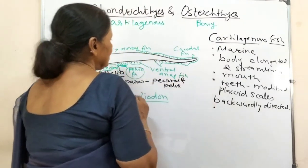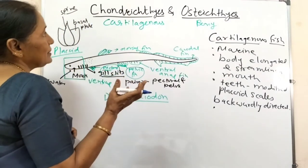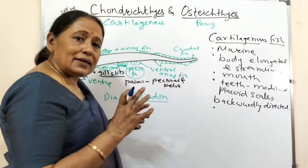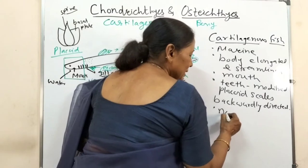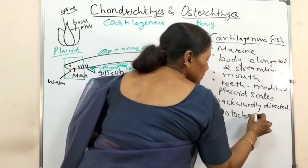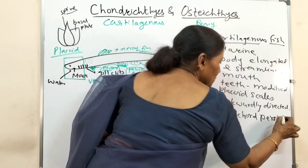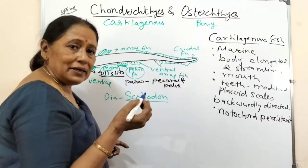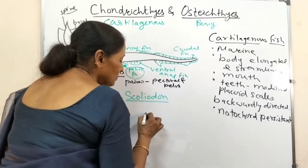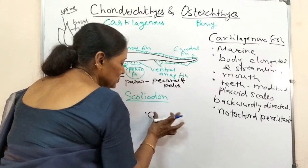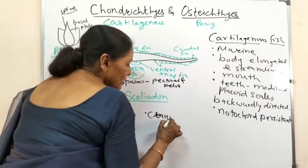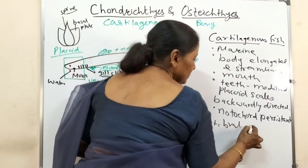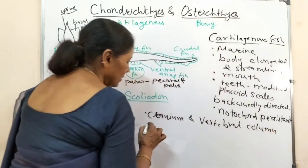These Chondrichthyes are vertebrates, but the notochord has not disintegrated - notochord is persistent throughout their life. The notochord persists but the vertebral column has also formed. The cranium and the vertebral column are both cartilaginous.